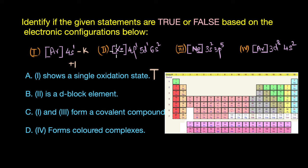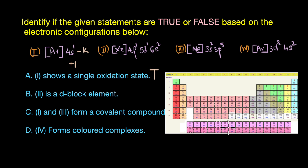Examining configuration 2 (Xe 4f1 5d1 6s2), it has partially filled f orbitals in addition to d orbitals, so it is not a d-block element but an f-block element. This element belongs to the lanthanide series — specifically, it is the configuration of cerium. Therefore, statement B is false.